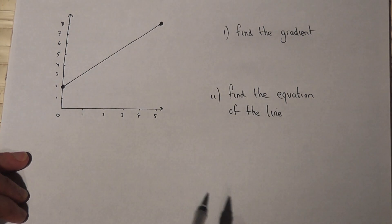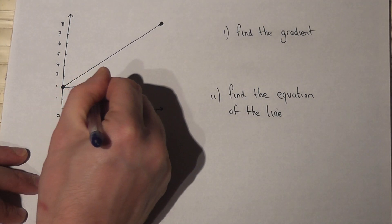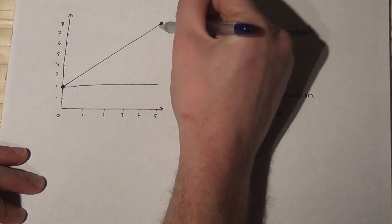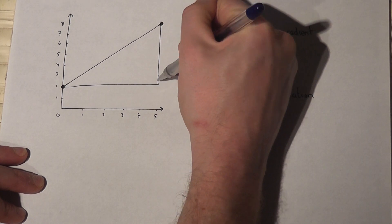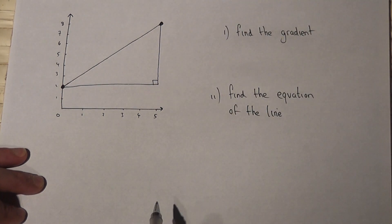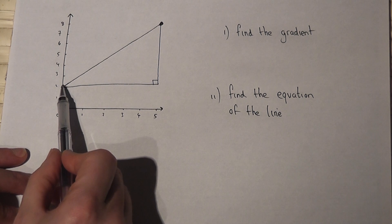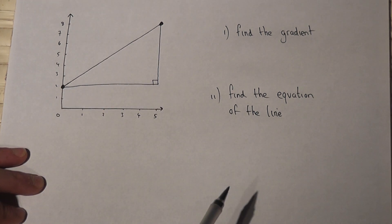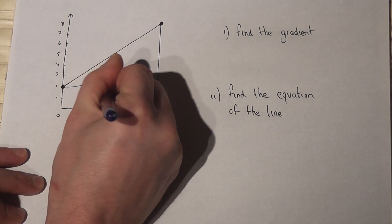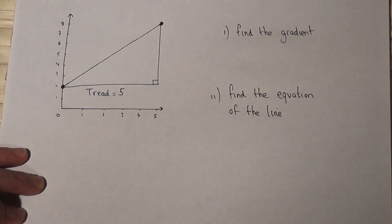Between two known coordinates we draw a right angled triangle, like so. We then work out how wide that triangle is, that's called the tread. Now 0 to 5 is just 5. So the tread is equal to 5.